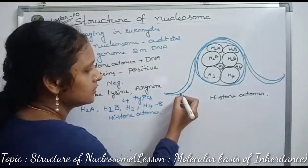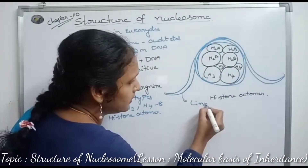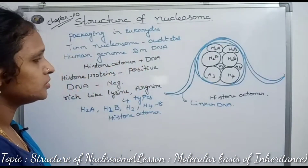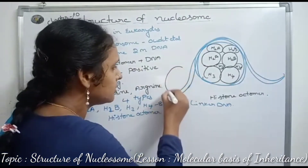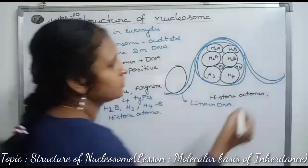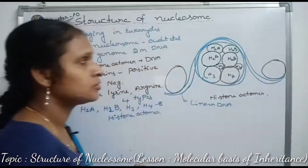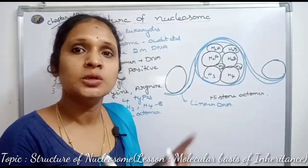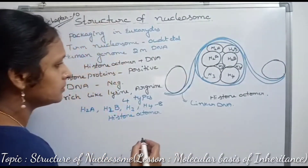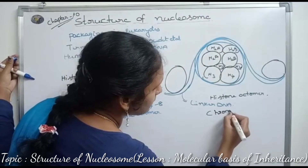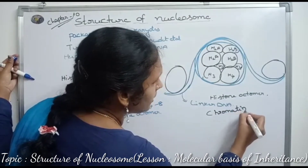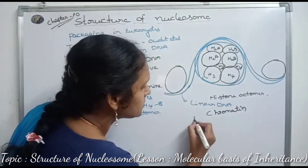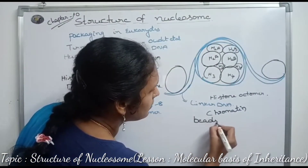Here is the linker DNA connecting one histone octamer to the next. The histone octamers are the nucleosome repeating units that form chromatin. When observed under an electron microscope, this chromatin appears like beads on a string.